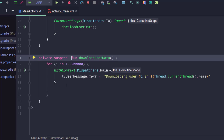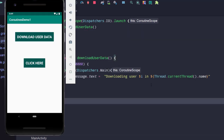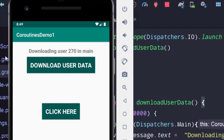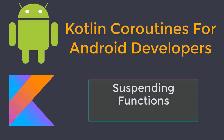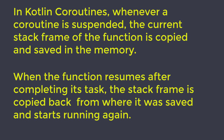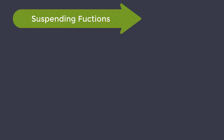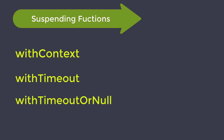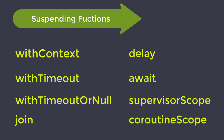Let's run this and see it in action. Yes, the app is working as expected. This is how we switch a coroutine between threads. In Kotlin coroutines, whenever a coroutine is suspended, the current stack frame of the function is copied and saved in memory. When the function resumes after completing its task, the stack frame is copied back and starts running again. The Kotlin coroutines API provides many functions to make our work easier, and almost all of them are suspending functions: withContext, withTimeout, withTimeoutOrNull, join, delay, await, supervisorScope, coroutineScope.